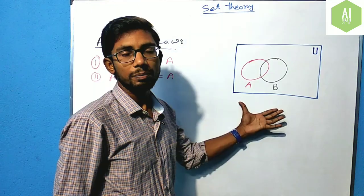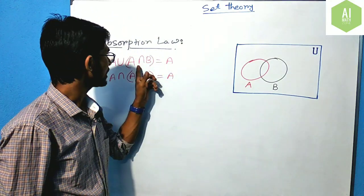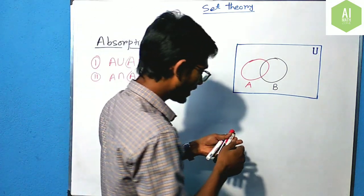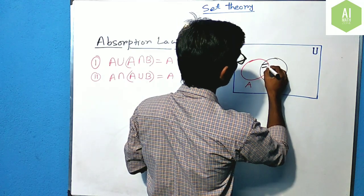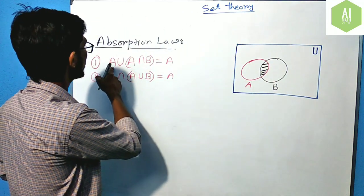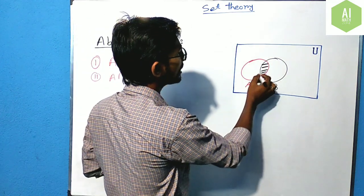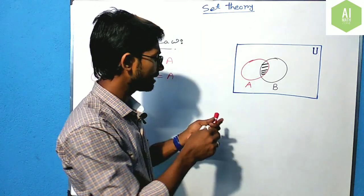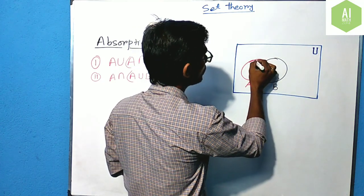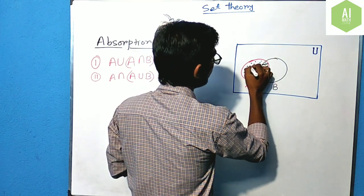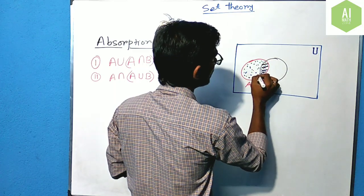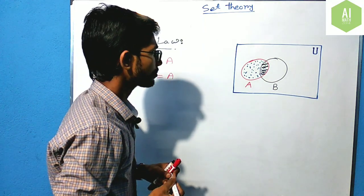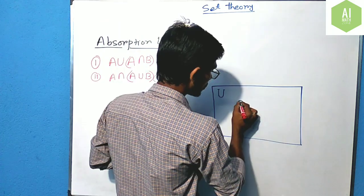We will show this using the Venn diagram. In the Venn diagram we will prove the first one: A union (A intersection B) equals A. A intersection B means the common area, and when you take the union of A with that common area, you definitely get set A. That part is actually the set A, so A union (A intersection B) equals A.